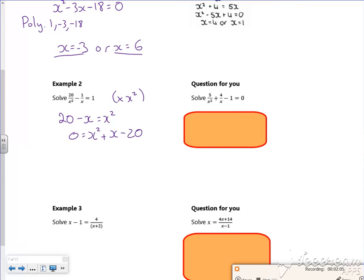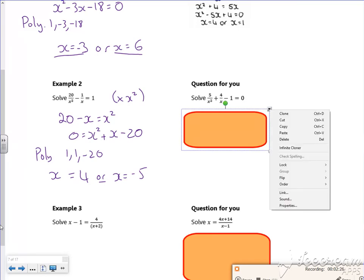Hang on. I did that right. Yeah, it factors in 5 and minus 4. So put it into poly. Put it into poly, with a 1, a 1, and a minus 20, gives us x equals 4, or x is equal to minus 5. There. Need to read my answers more, don't I? Here's the one for you.